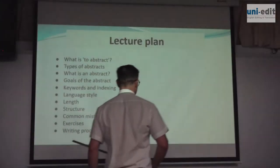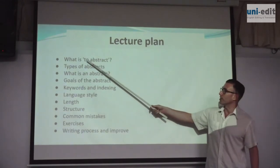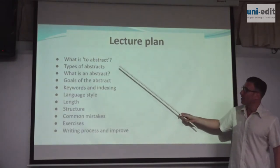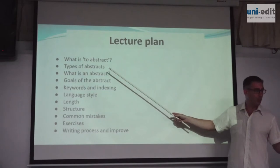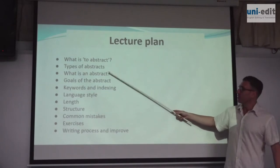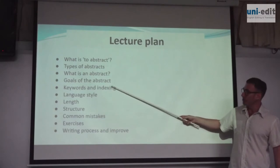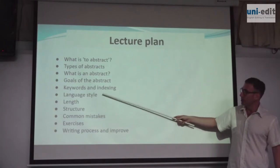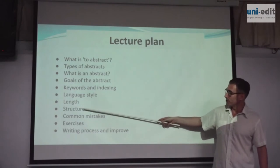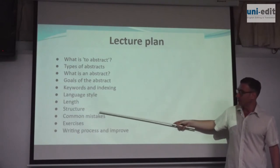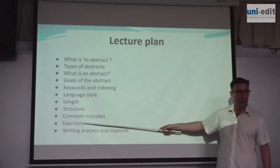So first we have: what is an abstract, or what is to abstract? Types of abstracts — there are many. What is an abstract? We are academics so we need a definition. The goals of the abstract, keywords and indexing, the language style of abstracts, the length of the abstract, the structure of the abstract, the common mistakes in the abstract, and some exercises.